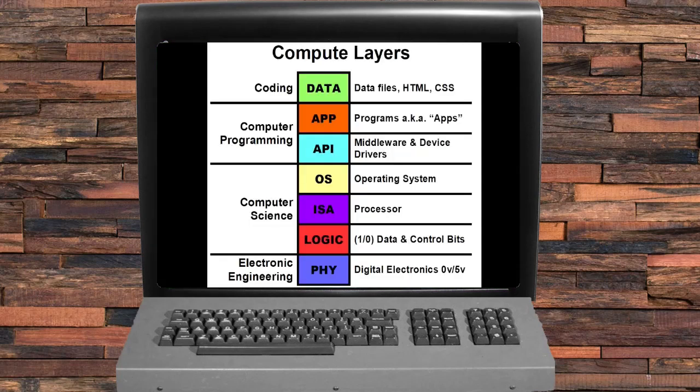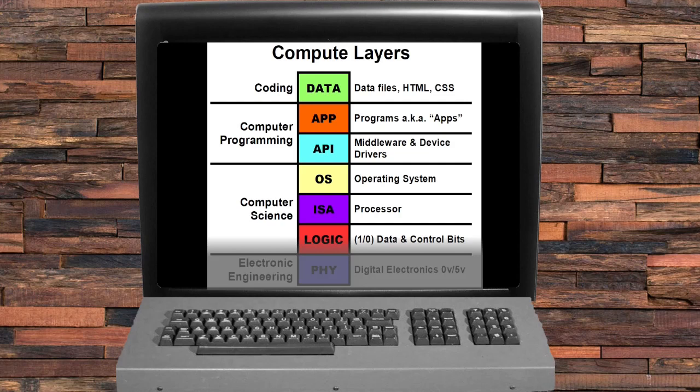So you may ask, where is the line between computer science and electronic engineering? Feel free to debate this in the comment section, but for this series we'll consider computer science to be everything from the logical ones and zeros up. How those ones and zeros are represented physically — as either zero and five volts, zero and 3.3 volts, or even negative 11 and plus 11 volts — all of that we'll consider to be an issue of electronic engineering.